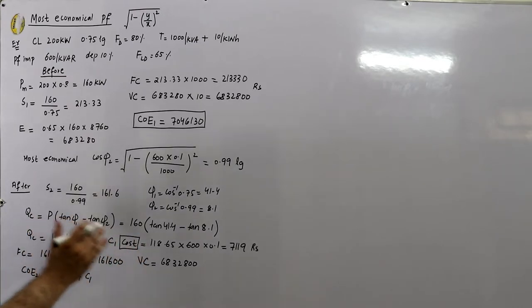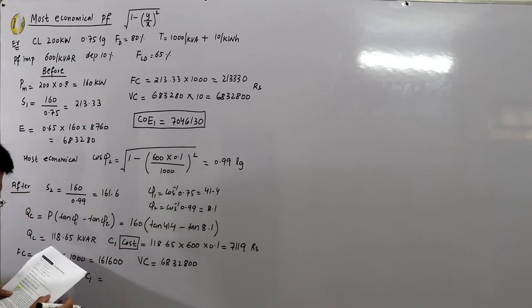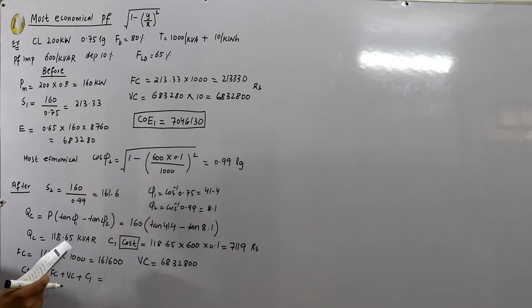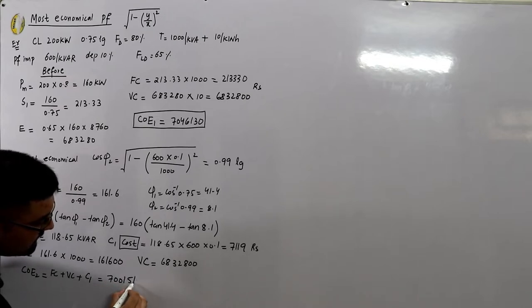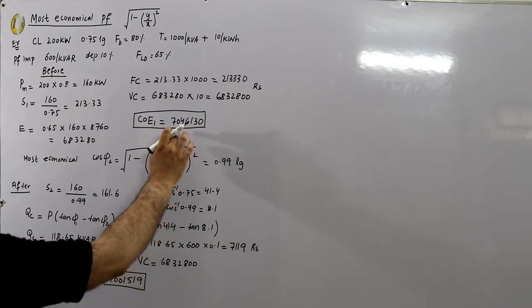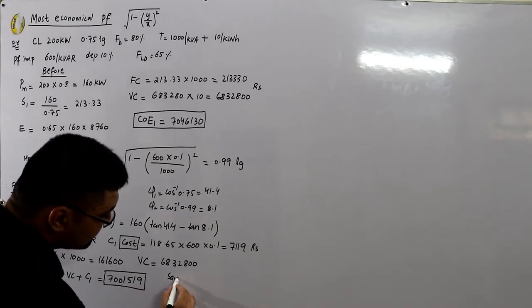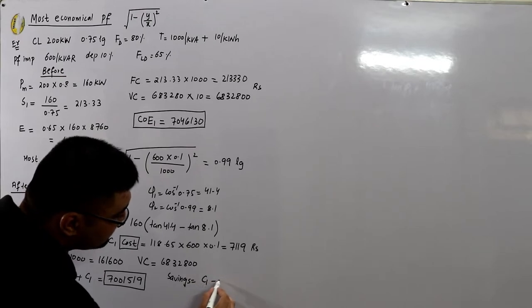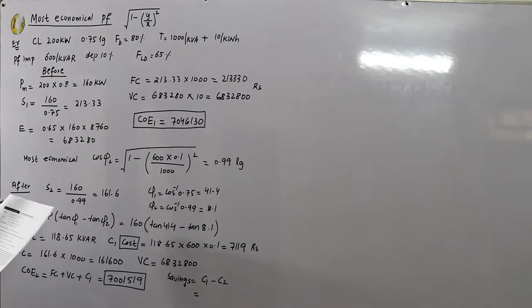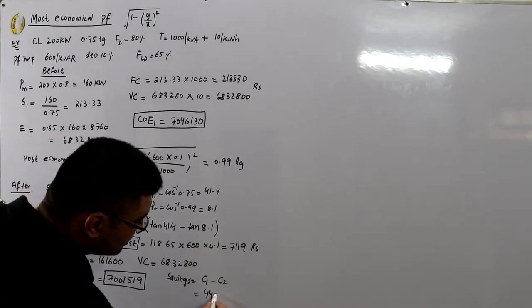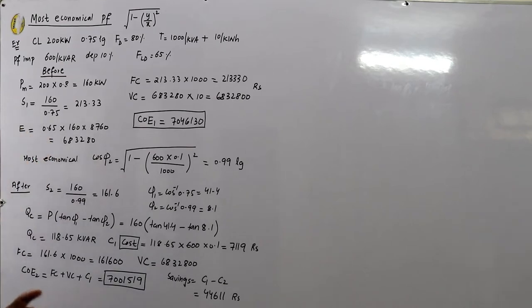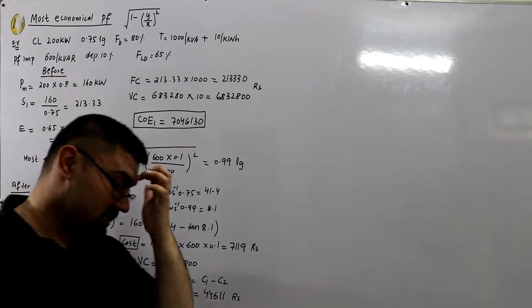The total cost of electricity after power factor correction, C₂, is the fixed cost plus the variable cost plus the cost of the power factor improvement device, which comes out to 7,001,519 rupees. Comparing with C₁, the annual savings are C₁ minus C₂, equal to 444,611 rupees saved per year by improving the power factor to the most economical value.